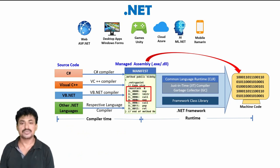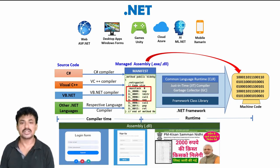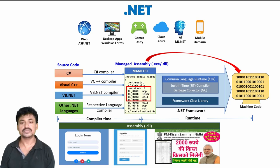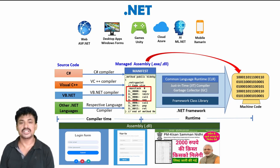For example, if you have a website that contains a login page, a sign-up page, and a main page, and you click on the login page, only the related form code will be converted into machine code. It does not compile the entire website into machine code. That is why .NET applications can run a little bit faster.